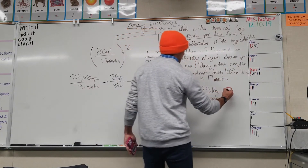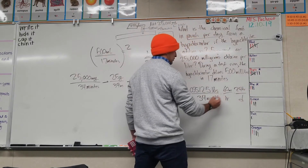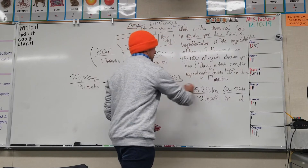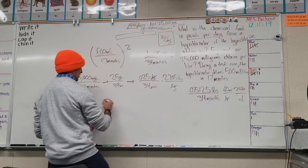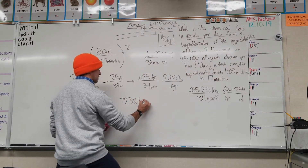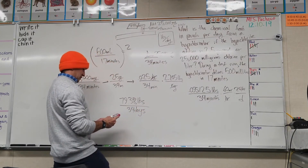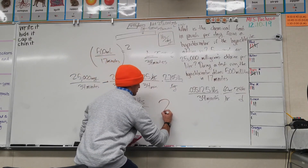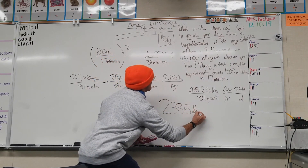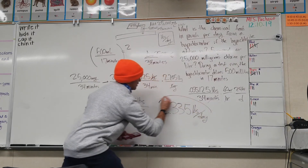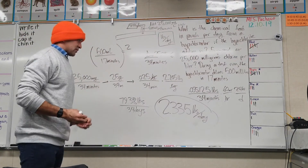There are 60 minutes in an hour and 24 hours in a day. Multiplying 0.055125 pounds by 60 and by 24 gives 79.38 pounds per 34 days' worth of minutes. Dividing by 34 gives approximately 2.335 pounds per day. That is the answer using our new metric system tool.